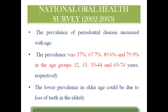Let's see the National Oral Health Survey of India done in 2002–03. That survey showed that around 57% of people in the age group of 12 and 68% in the age group of 15, almost 90% in the age group of 35 to 44, and 80% in the older group are having periodontal diseases. So periodontitis usually increases with age.